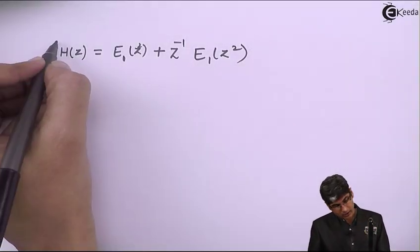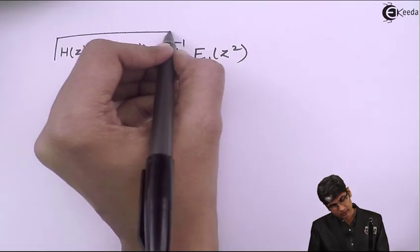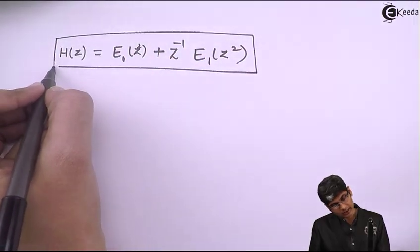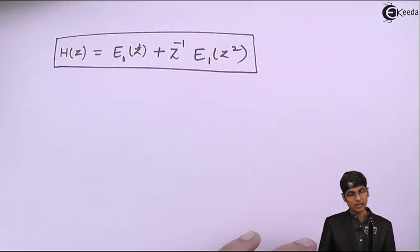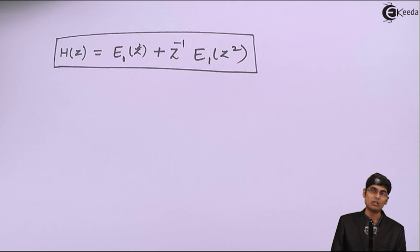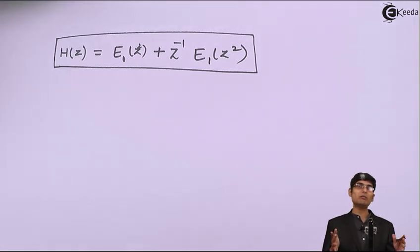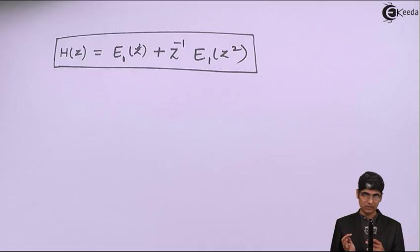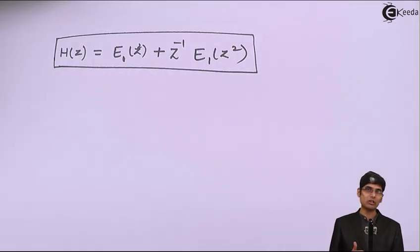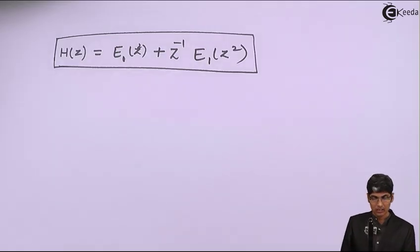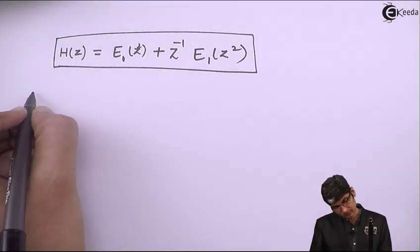Therefore H(z) equals E₀(z²) plus z inverse times E₁(z²). I have decomposed one big transfer function into two smaller filters, E₀ and E₁, because I decomposed the sequence into two sets — even and odd.